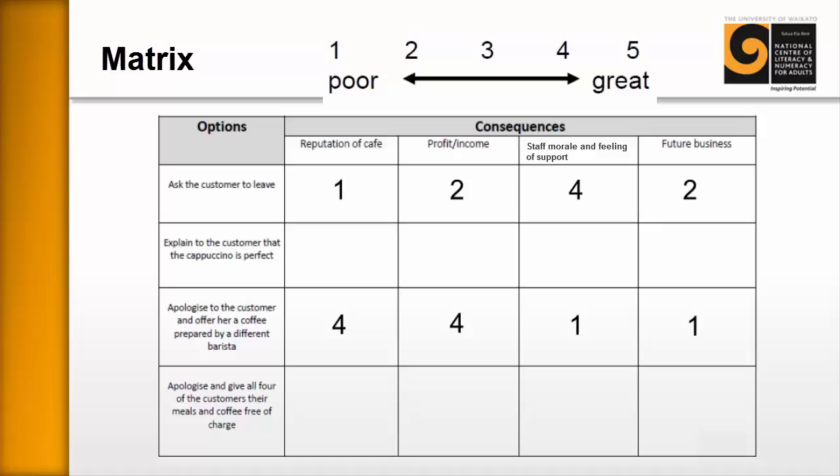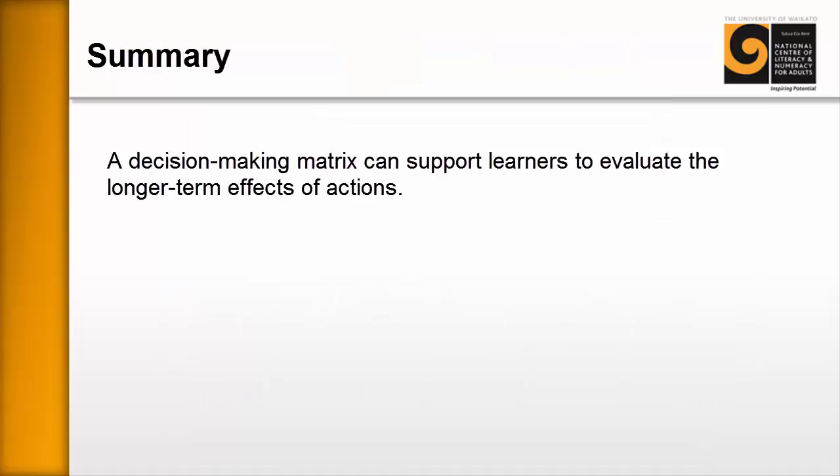The idea of this activity is that learners are able to be more objective about what they want. They can come up with multiple criteria for consequences and success, and they can also come up with multiple strategies. In summary, a decision-making matrix can support learners to evaluate the longer-term effects of actions. These matrices have been highly successful in the past. We wish you all the best.